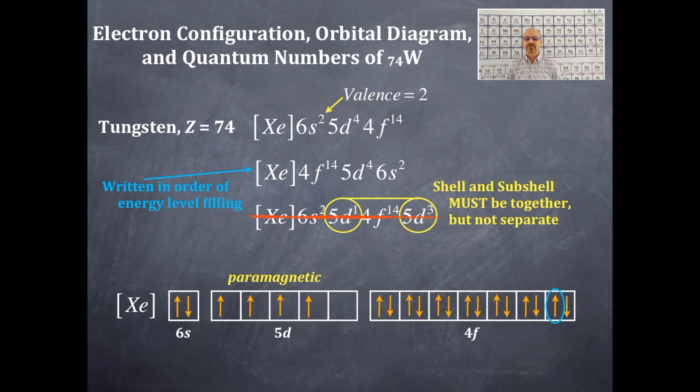n is the four in 4f, so the n value is 4. The l value is the type of orbital. It's an f orbital. If it's s that's 0, if it's p that's 1, if it's d that's 2, and if it's f it's 3.